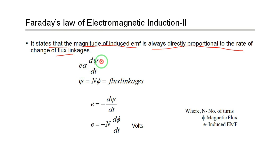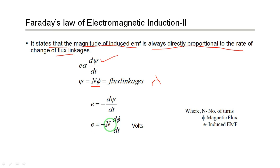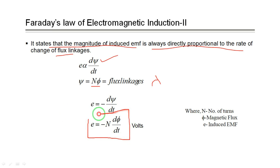E is directly proportional to dψ/dt, where ψ is the flux linkages (indicated by ψ or λ in some textbooks). Flux linkages equals N × φ, where N is the number of turns in the coil and φ is the amount of flux. The formula becomes: e = −N × dφ/dt. The negative sign comes from Lenz's law, which states that the induced EMF opposes the change producing it.